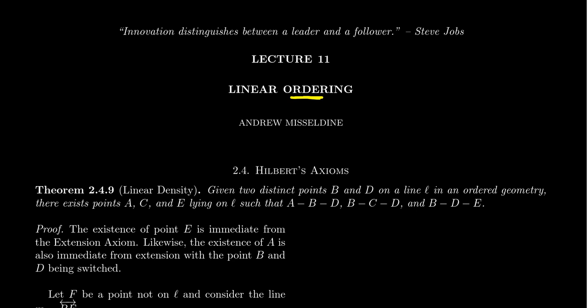Before we do that, in this video, we're going to prove the idea of linear density. That is, if you take any two points on a line, you could always find a bunch of other points related to them by betweenness relationships. More specifically, if we have a line L and two distinct points on that line, call them B and D, in ordered geometry, then we can always find three other points A, C, and E on the line L, such that the point A has B between A and D, the point C will be between B and D, and the point E will satisfy the relationship that D is between B and E.